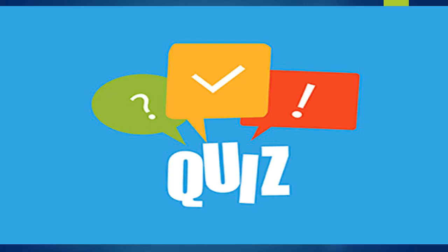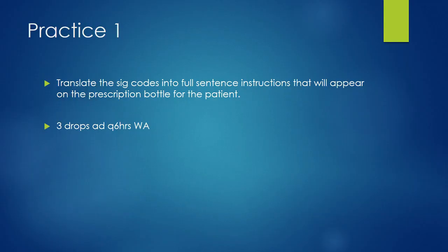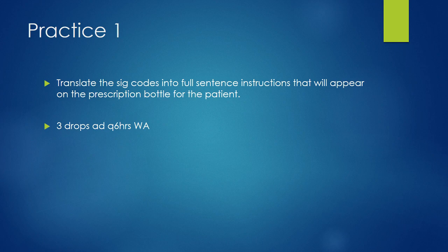Okay, so let's take a quiz. I hope you wrote down those sig codes or at least memorized them before we take this quiz and apply that knowledge. For practice number one, translate the sig codes into a full sentence instruction that will appear on the prescription bottle for the patient: three drops AD Q6HRS WA. Pause and take some time to review your notes — once you have it, go ahead and click play.